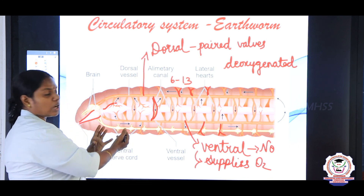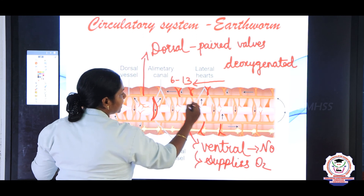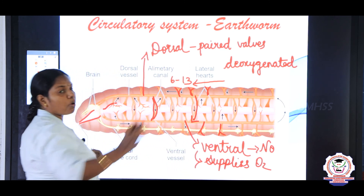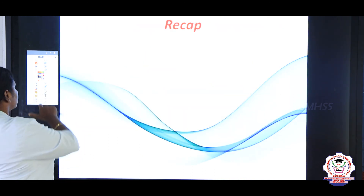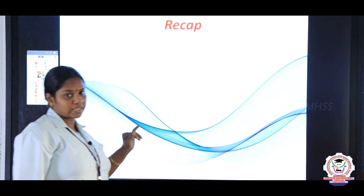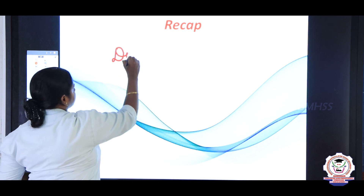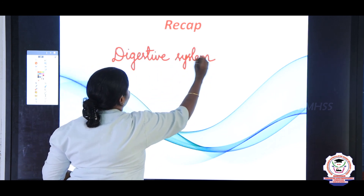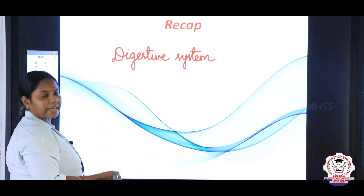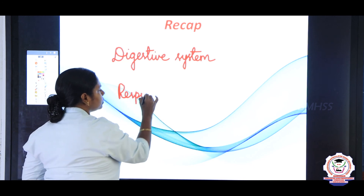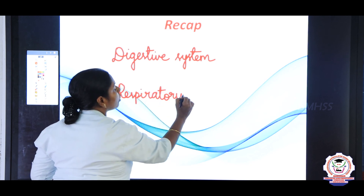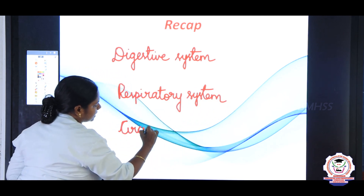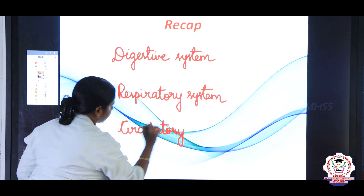The dorsal blood vessel collects blood from all parts of the body, sends it to the ventral blood vessel through the lateral hearts, and from the ventral blood vessel it is distributed to all parts of the body. In this session we discussed the digestive system, the respiratory system — respiration takes place through the body surface — and the circulatory system.